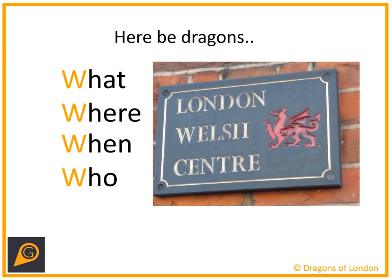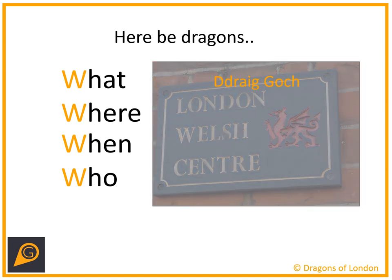Using that knowledge, we can build a record. We did a project with a group called Dragons of London who record the appearance of dragon symbology — dragon statues and other iconography around London. It's a great example to use for recording. Looking at 'what': the Dread Gough, that red dragon. 'Where': quite clearly at the London Welsh Centre. 'When': the image was taken on the 8th of January 2021. And 'who': me. That builds the very basics of a record — the minimum you need to submit.